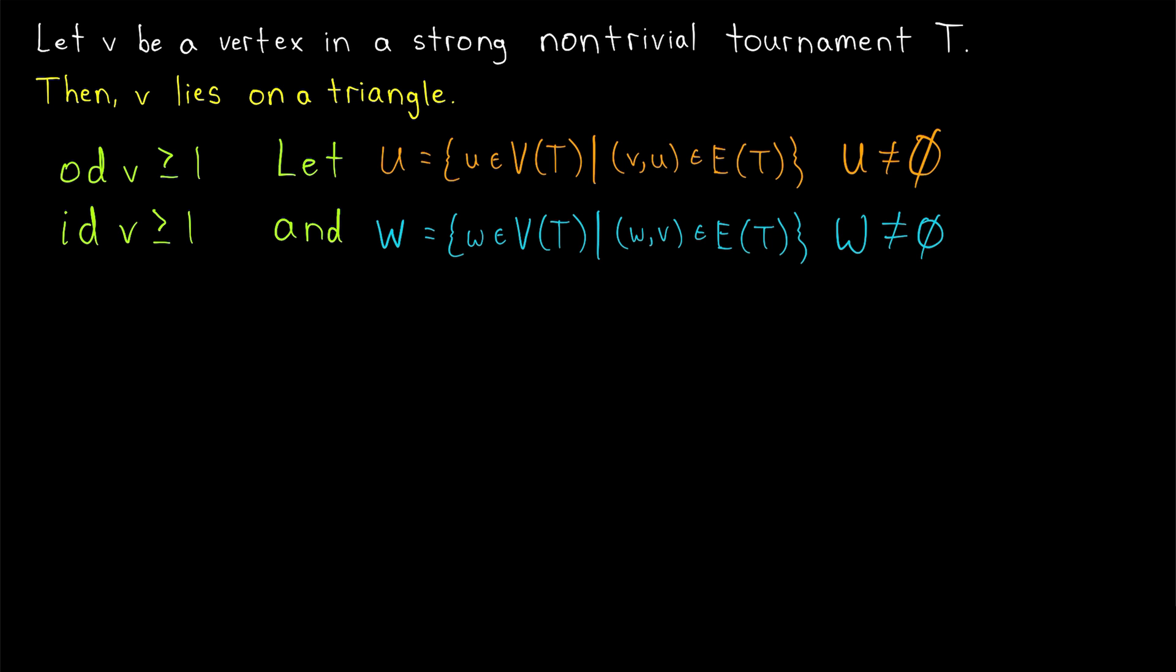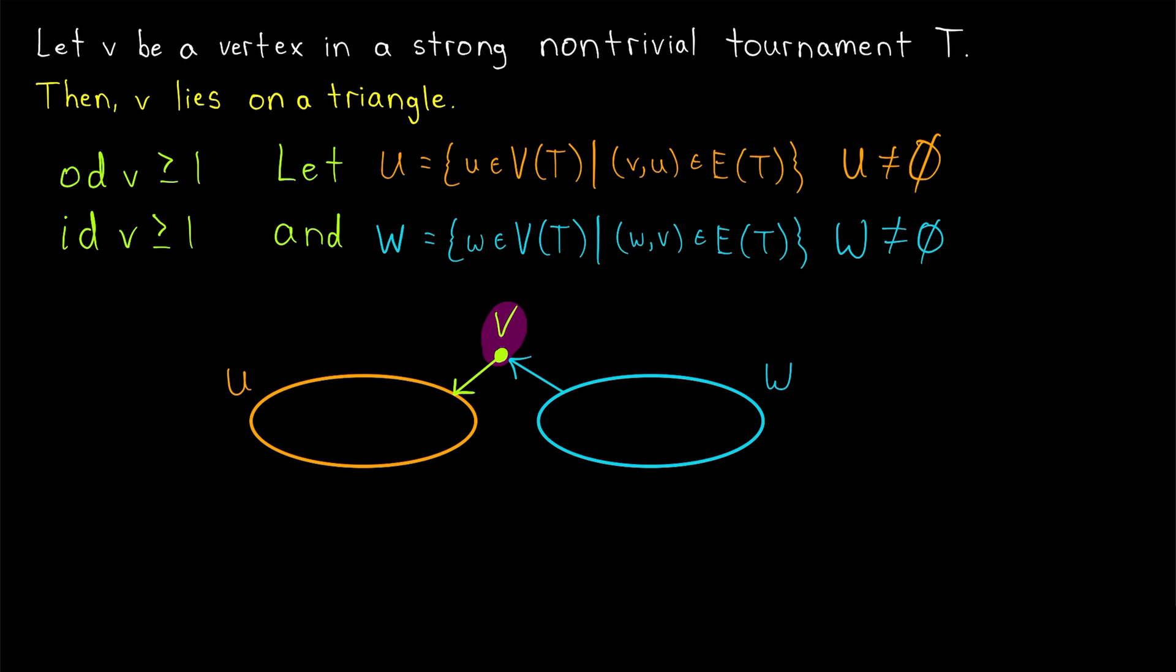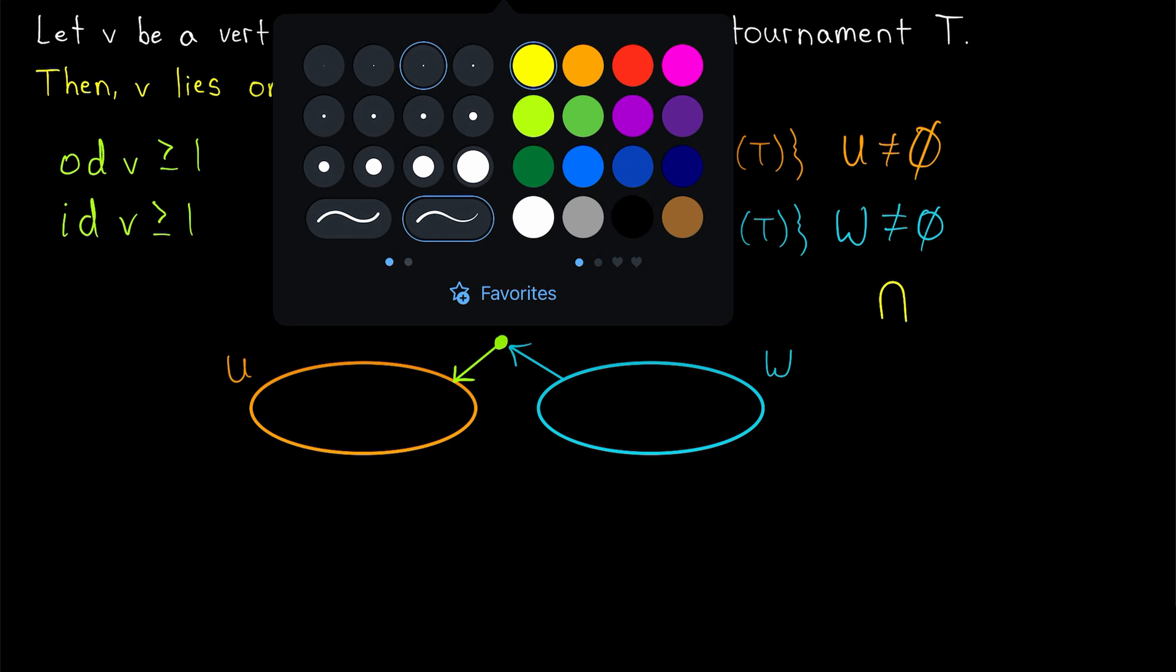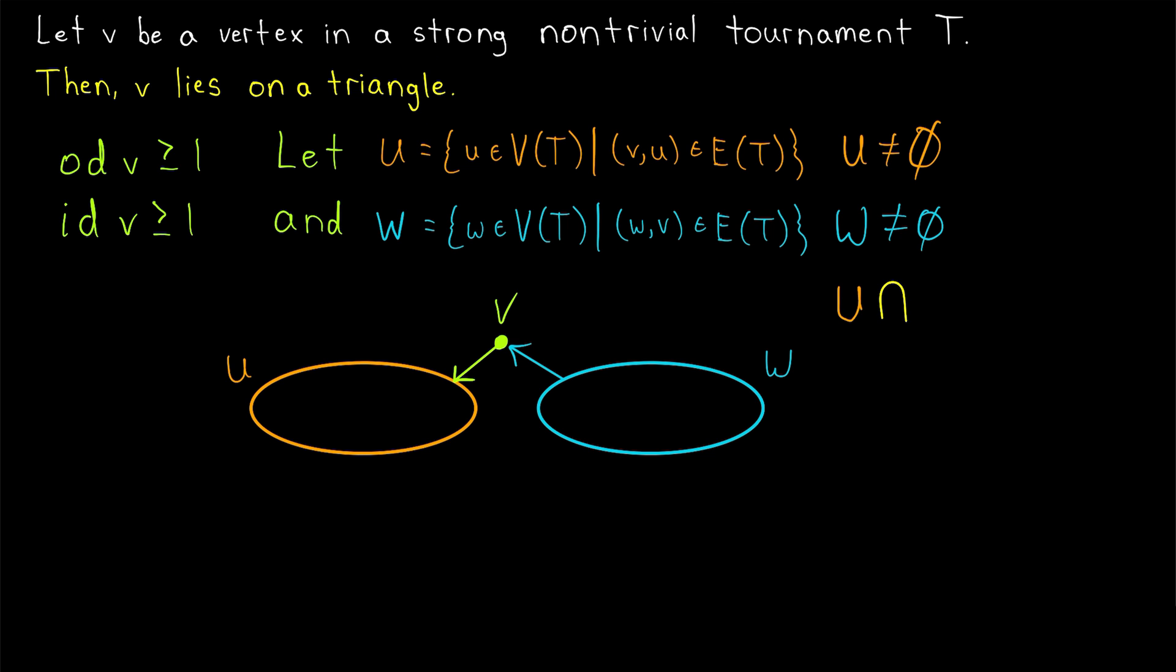Now that we've got colors, let's go ahead and make a simple diagram representing our situation. Here is our arbitrary vertex v. This is the set U of all vertices that v is adjacent to. This is the set W of all vertices that are adjacent to v. So they're the vertices that v is adjacent from. And perhaps it's also worth reminding you that although U and W are not equal to the empty set, their intersection is the empty set. That's because, remember, this is a tournament. So each pair of vertices is adjacent in exactly one direction. A vertex can be adjacent from v or adjacent to v, but it can't be both. So U and W have no vertices in common.